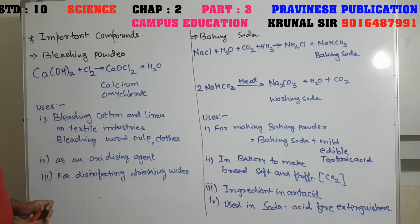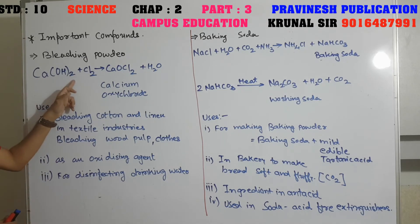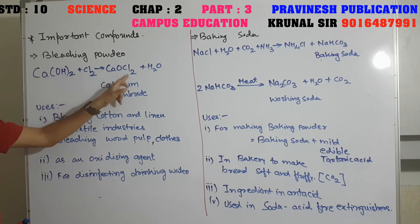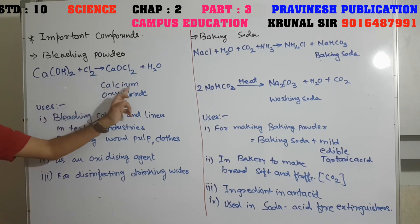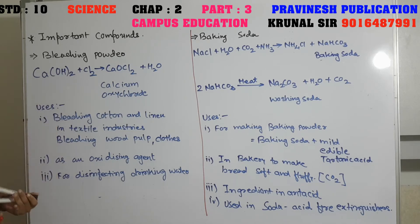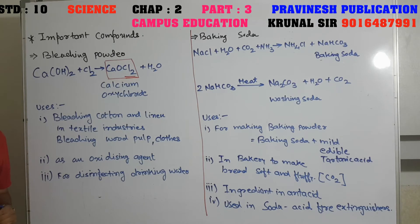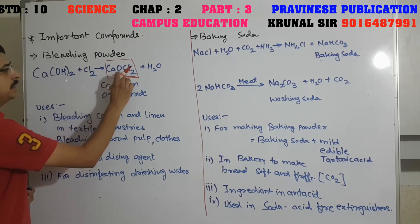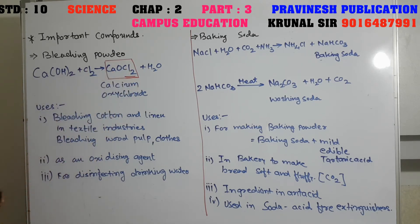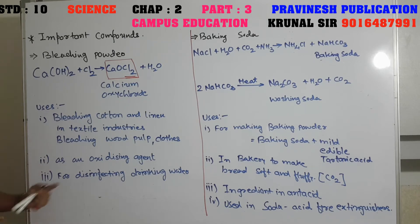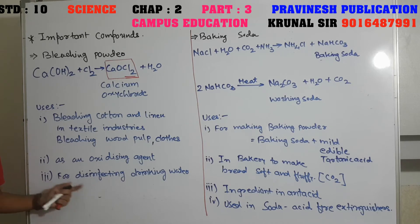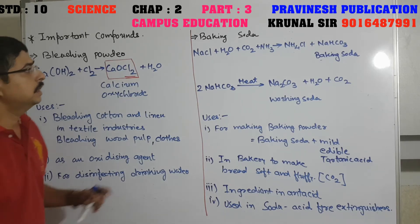Now, the first important compound is bleaching powder. Its preparation: Ca(OH)₂ + Cl₂ → CaOCl₂ + H₂O. Here CaOCl₂ is calcium oxychloride, known as bleaching powder. The bleaching agent in it is only chlorine. Uses of bleaching powder: first, for bleaching cotton and linen in textile industries and bleaching wood pulp and clothes; second, as an oxidizing agent; third, for disinfecting drinking water from germs.